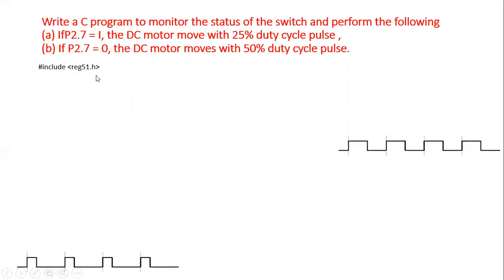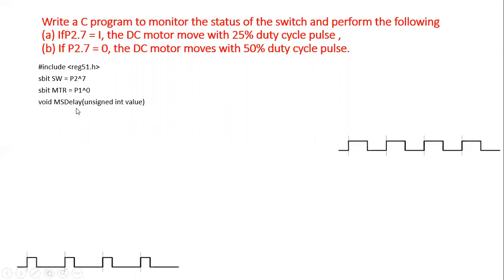For the code, we include the reg51a.h header file. SW is the name given to P2.7, and since we are using only one pin, P1.0 is named as MTR. There is a subroutine called ms_delay that takes an integer argument called value and does not return a value. Then the main program is written.